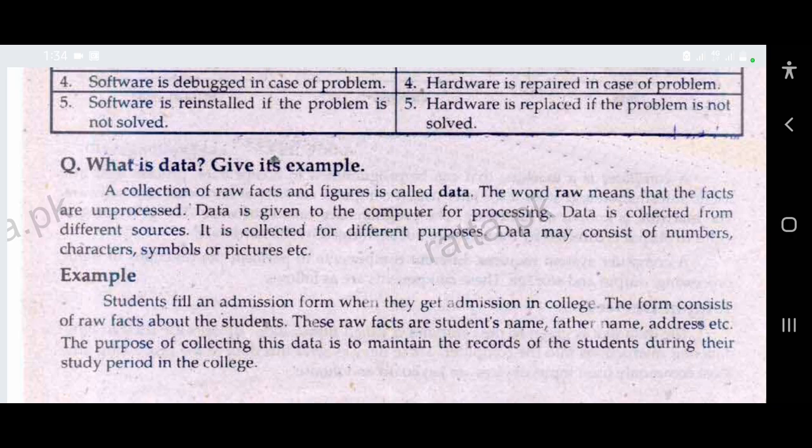Data may consist of numbers, characters, symbols, or pictures, etc. For example, when students get admission in college, they fill an admission form. The form consists of raw facts about the student, such as the student's name, father's name, and address. The purpose of collecting this data is to maintain the records of the student during their study period in the college.